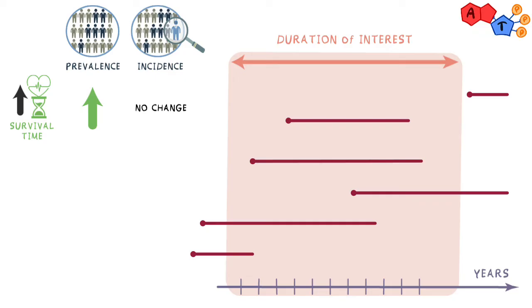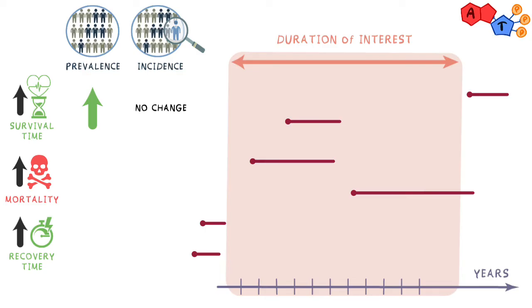The opposite is true when considering an increase in mortality or a faster recovery time. Although death is different from recovery, they both shorten the lines extending from the dots. Therefore, some lines may leave the timeline we're interested in, and they won't be counted, so prevalence decreases. But again, since we didn't change the number of dots, incidence is still the same.